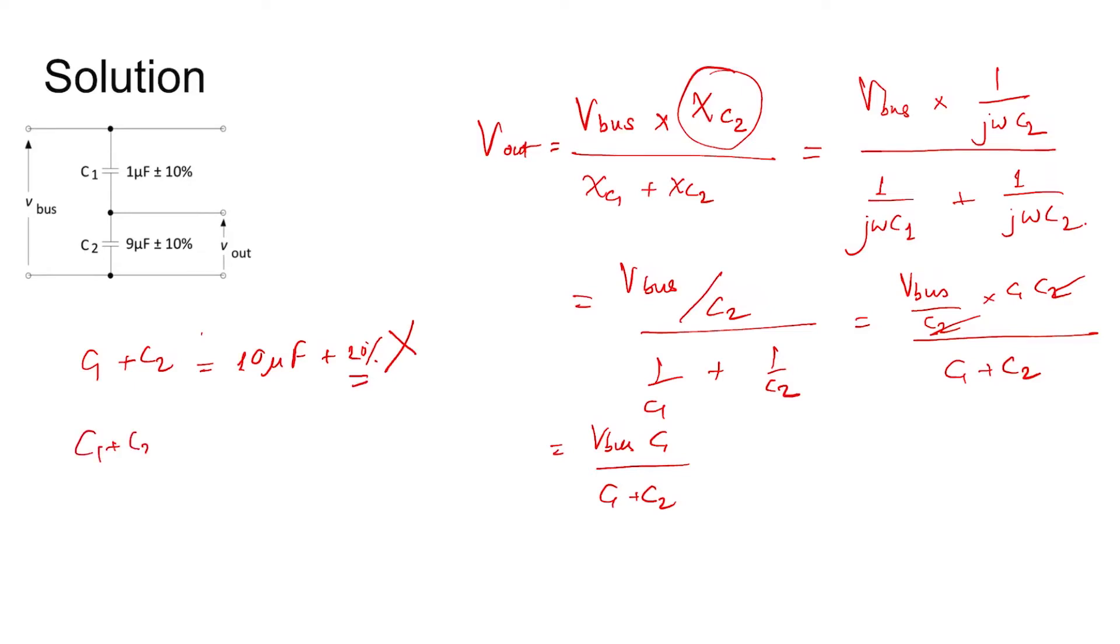So we do C1 plus C2 equal to - since this is summation, we need to find the individual absolute errors and then they will be added. So 1 micro into 0.1 plus 9 micro into 0.1, this will be in microfarad the error, plus 10 microfarad is the C1 plus C2 actual value.